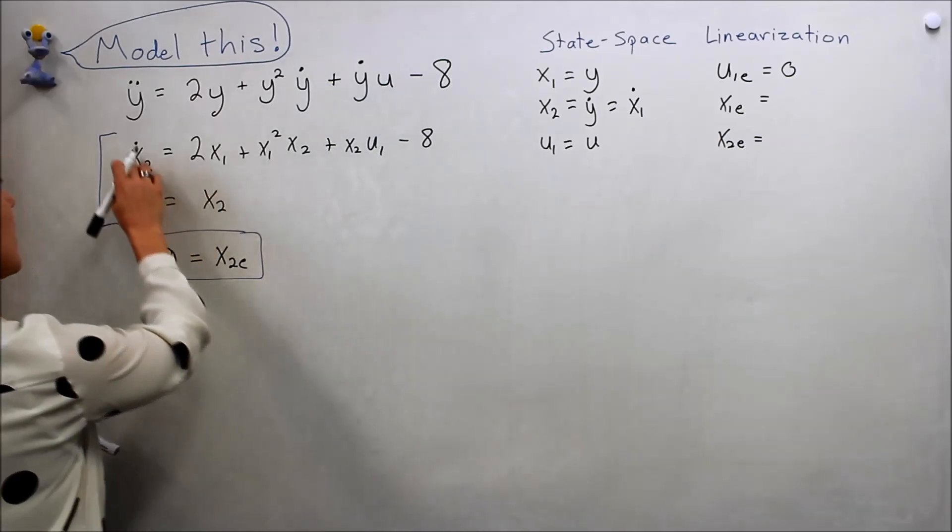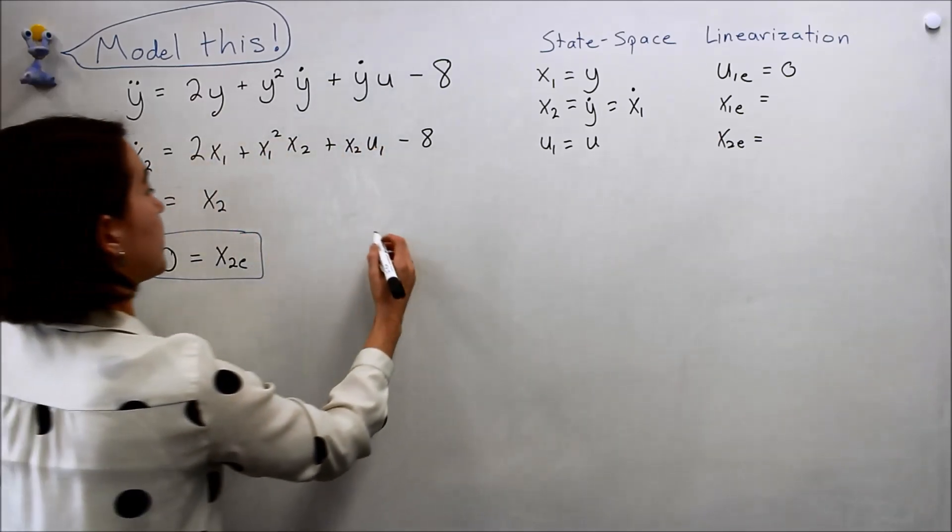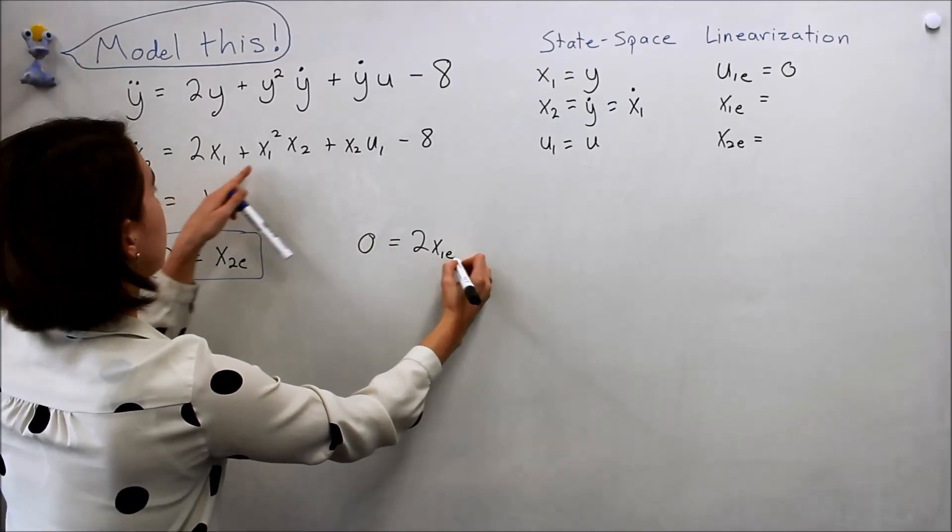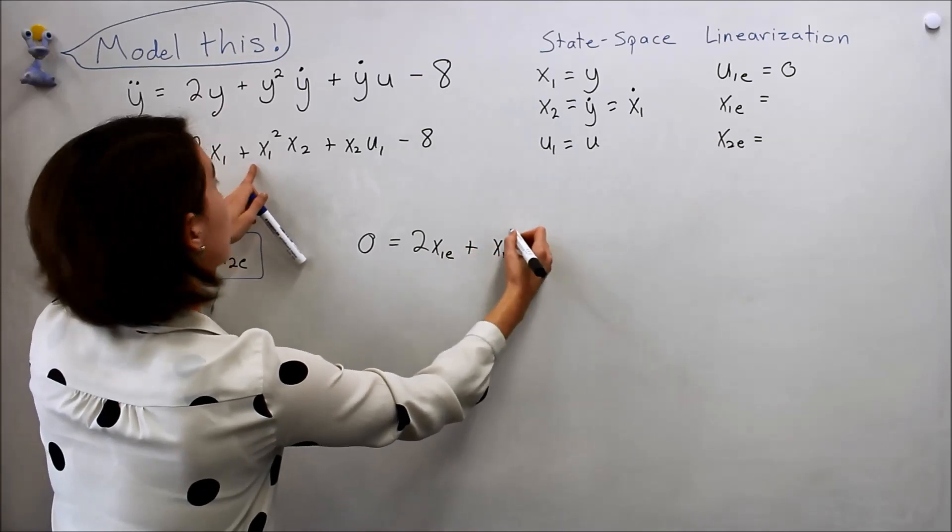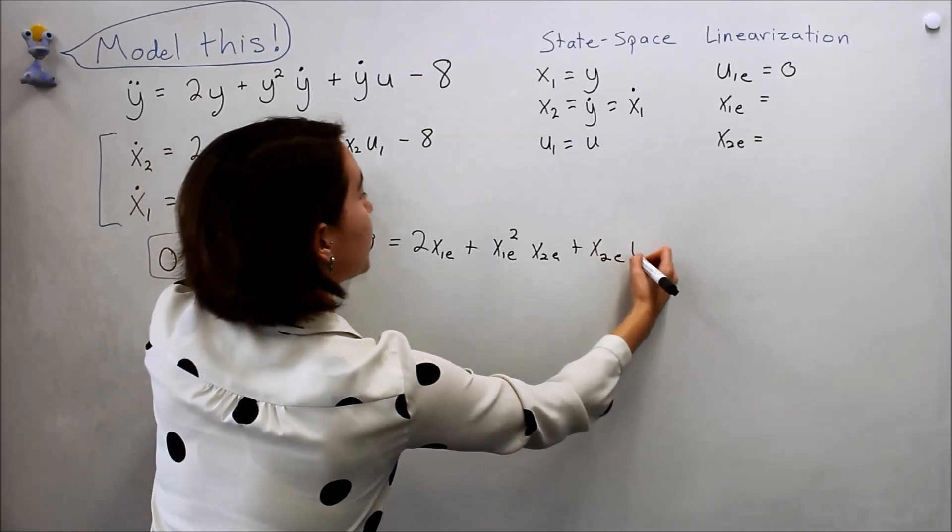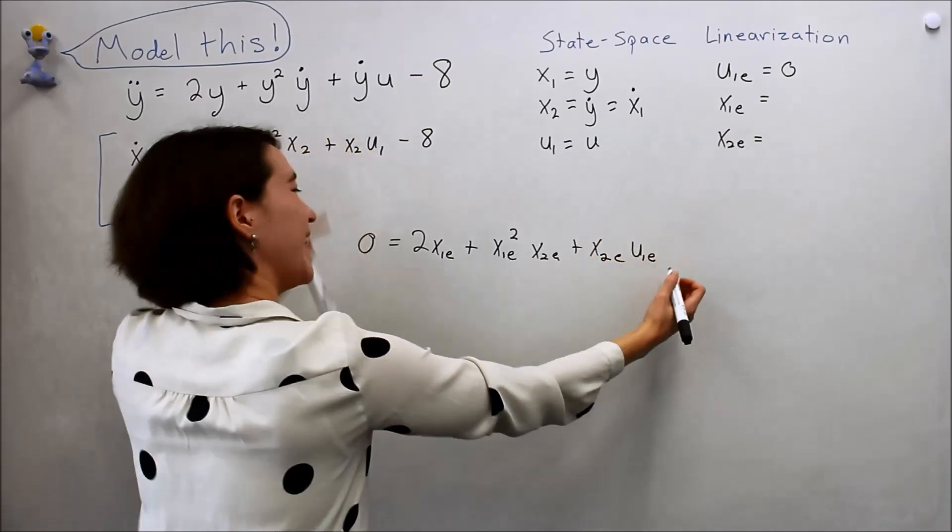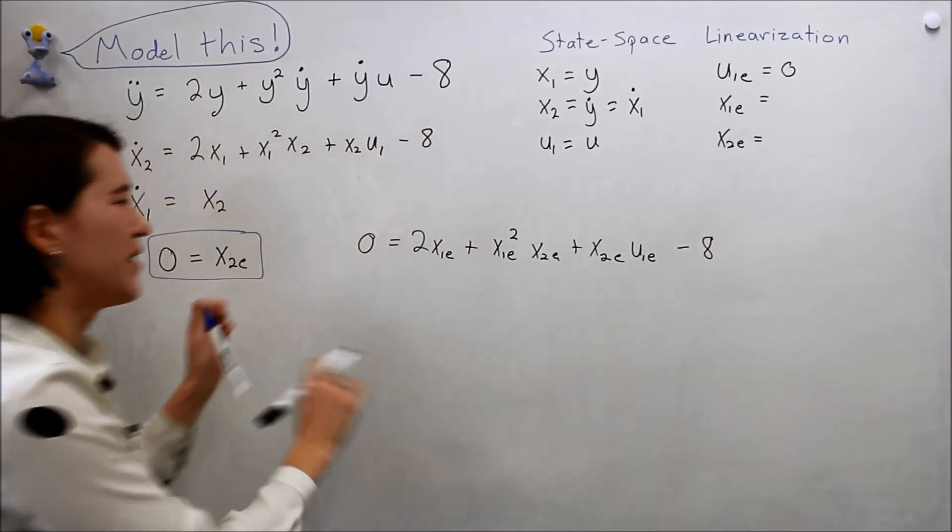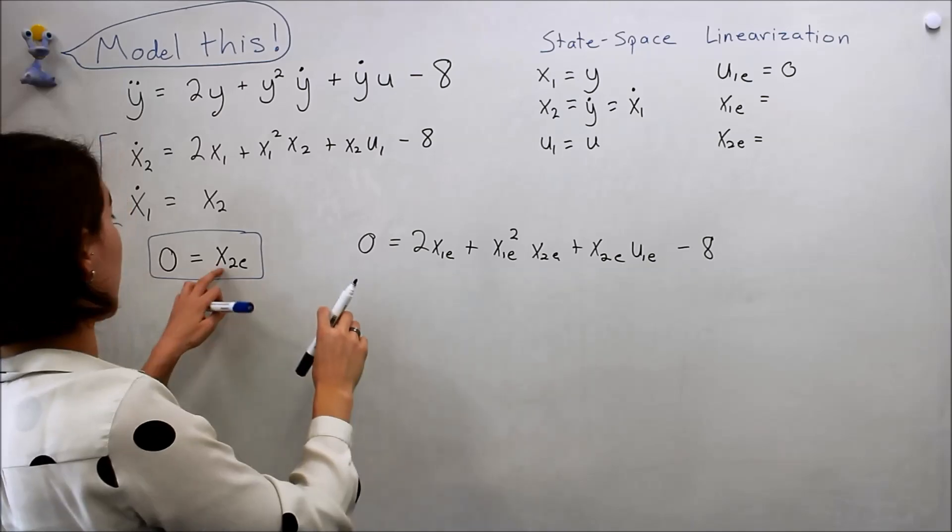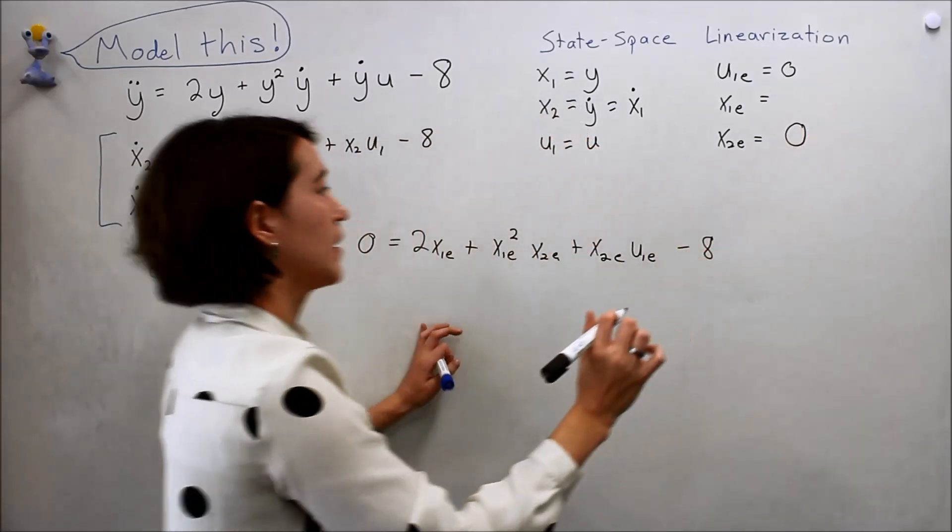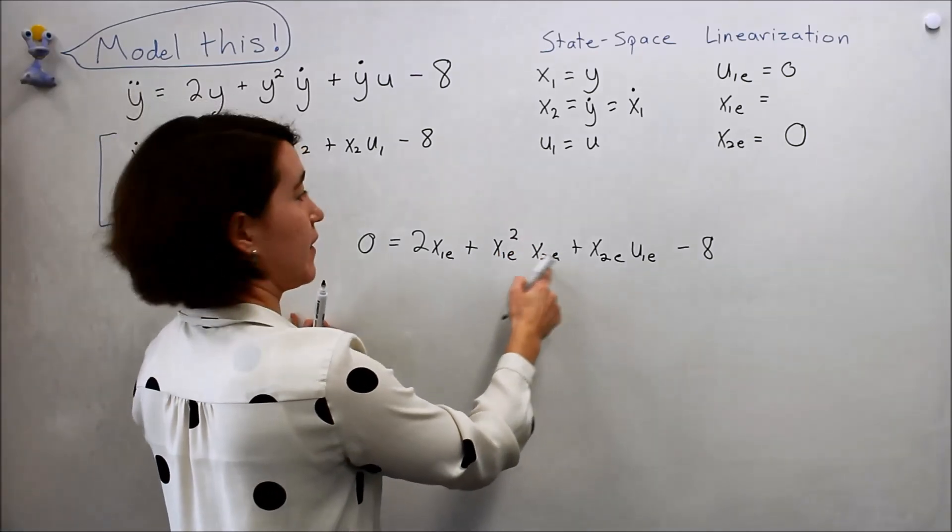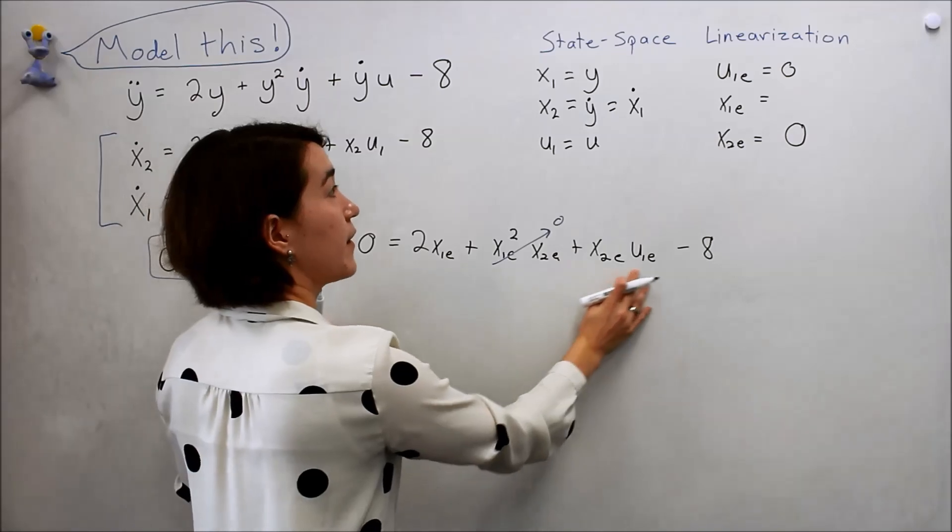Let's now look at this, set it equal to zero and see what we can do. So now we'll say zero equals 2x1e plus x1e squared times x2e plus x2e minus 8. But we know x2e is zero, so let's fill this in. This value has x2e, that's zero. Both these values are zero, so this is zero.